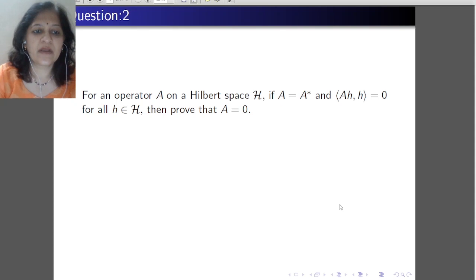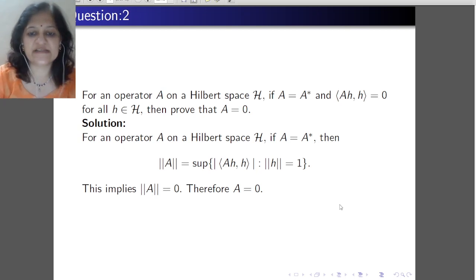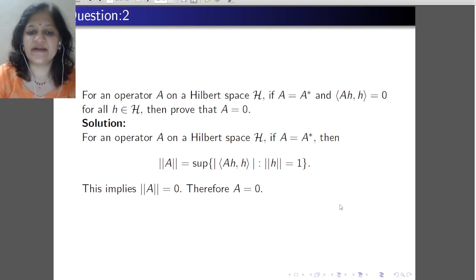Next question: for an operator A on Hilbert space H, if A equals A star (meaning A is self-adjoint or Hermitian) and the inner product of Ah with h is 0 for all h, then we want to prove that A equals 0. For a self-adjoint operator A, the norm of A is given by the supremum of |⟨Ah, h⟩| such that norm h equals 1. By the given condition, ⟨Ah, h⟩ is 0 for all h, meaning norm A equals 0, therefore the operator A is 0.